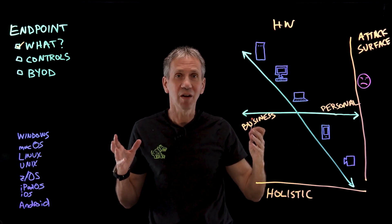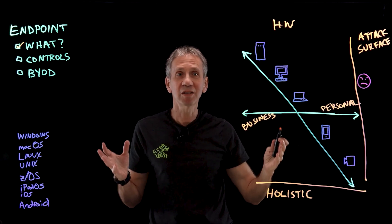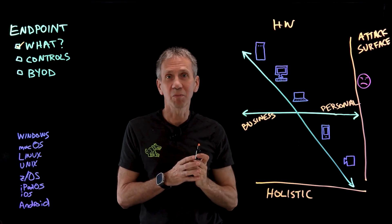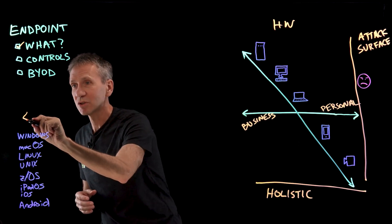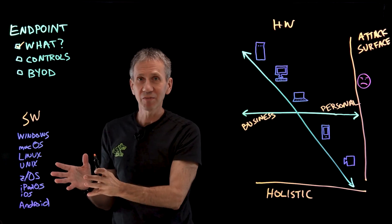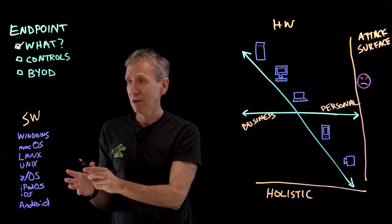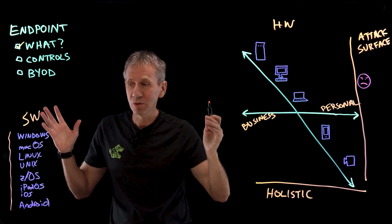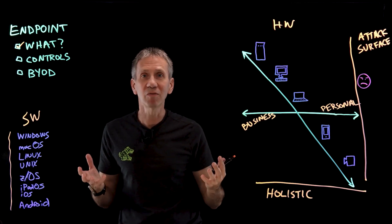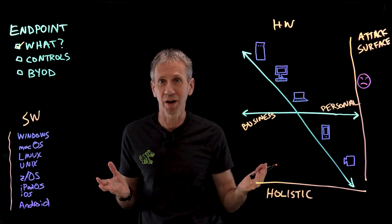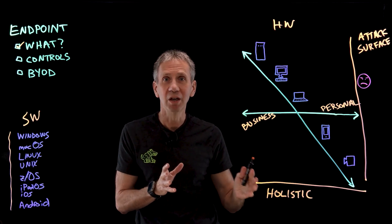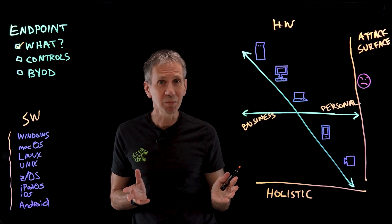The expanding size of the perimeter, the expanding size of the attack surface, is creating a lot of challenges for us. And this is looking at it strictly from a hardware standpoint. There's also a software view — across these different devices, I've got lots of different operating systems to deal with: Windows, Mac OS, Linux, Unix, mainframes, mobile devices, and IoT devices running who knows what. Every single one of these creates more complexity, and remember — complexity is the enemy of security.